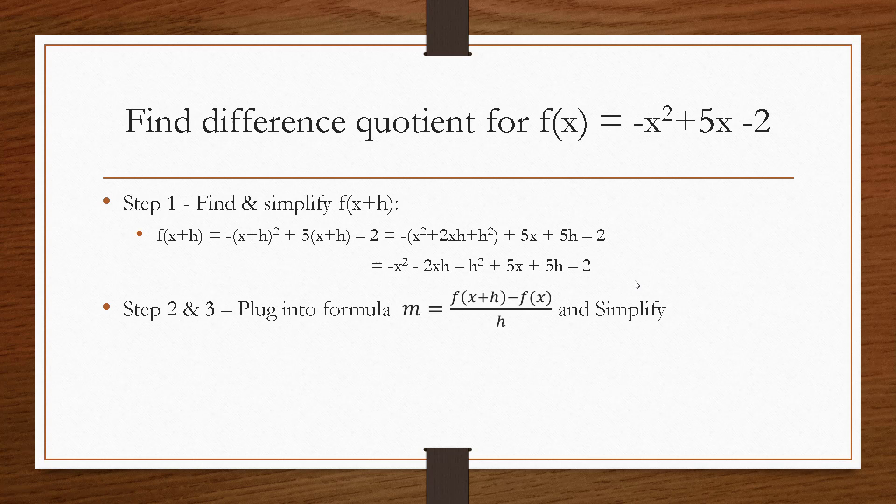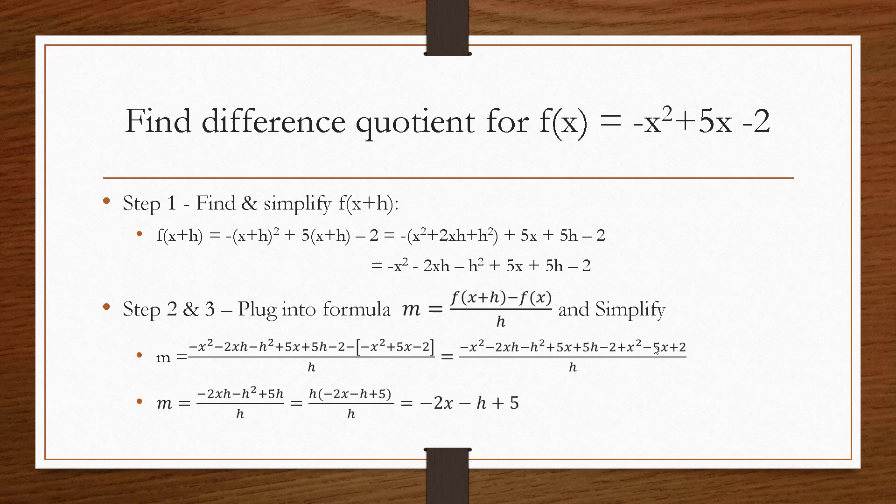Plugging this into our difference quotient formula gives us, this is our f of x plus h, what we just found, minus f of x. And notice I wrote minus parentheses f of x, because we are going to need to distribute that negative, and all that over h. In the next step, we're going to distribute the negative. And when we distribute the negative, that just changes the signs on everything in f of x. All right, now we're going to cancel out terms. And a quick note for all polynomial functions, everything in f of x will cancel out with something over here on the left with f of x plus h. So just a quick check to make sure you did it correctly. And when we do our canceling out, we get negative 2xh minus h squared plus 5h, all of that over h. Again, we can pull out an h, so we can cancel those h's out. And we're left with negative 2x minus h plus 5.